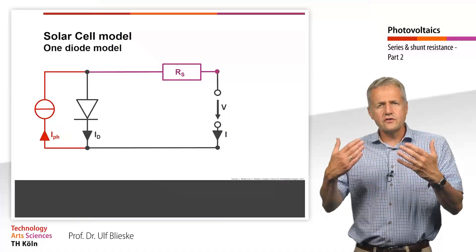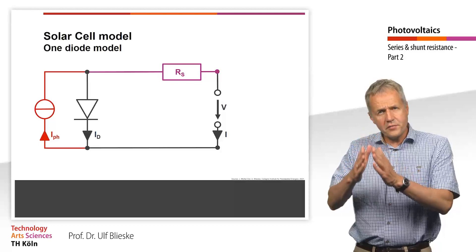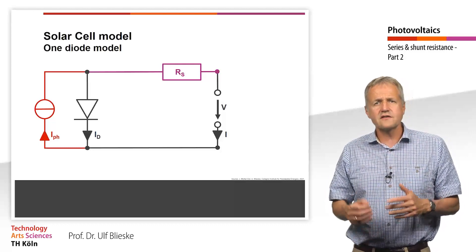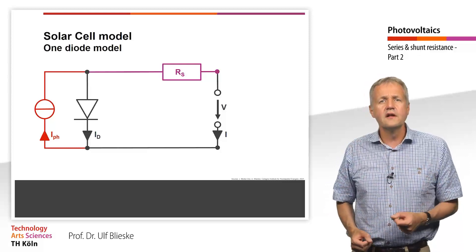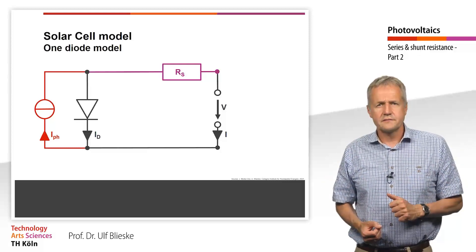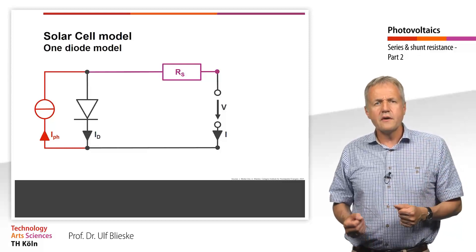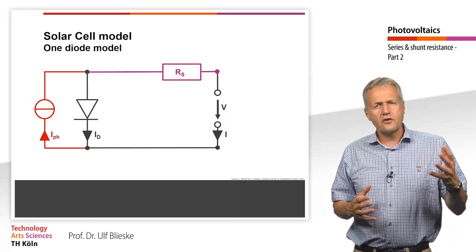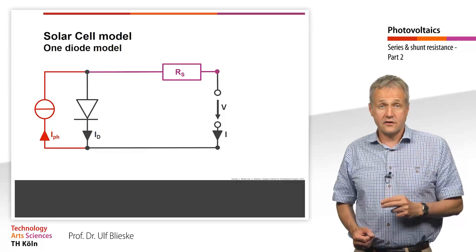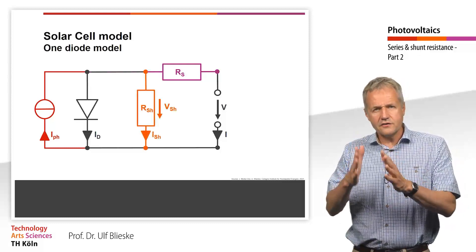In addition to the ohmic losses, there can be the occurrence of current paths that are parallel to the actual p-n junction. These currents can arise, for example, from material defects such as microcracks. In the equivalent circuit diagram, we model these alternative current paths using a parallel resistor, or shunt resistor, that is connected in parallel to the diode.